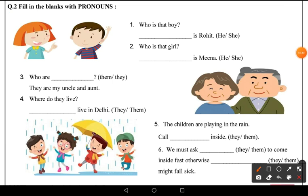Now look at the second question: fill in the blanks with the pronouns. We have some questions and we need to write the pronoun answers. Question one: 'Who is that boy?' For a boy we use 'he'. The answer is: 'He is Rohit.'